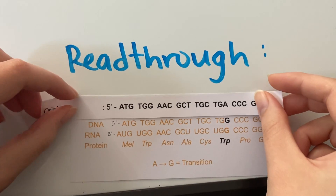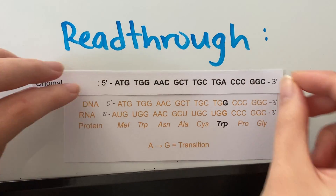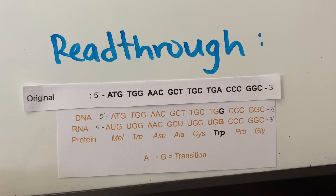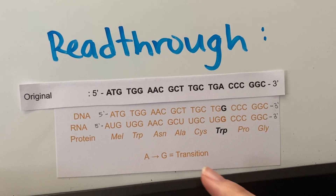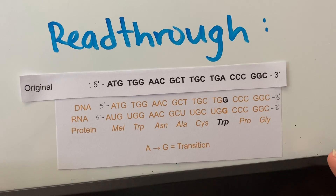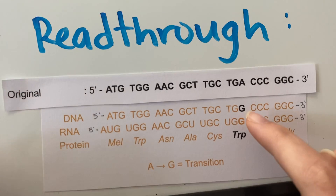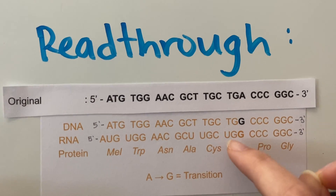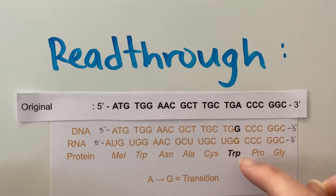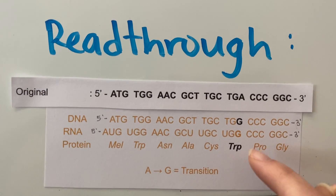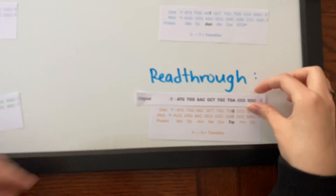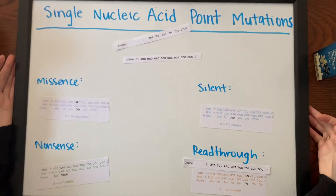Finally we have a read-through point mutation. In this case the stop codon is changed into a codon that codes for an amino acid, giving you a longer strand of protein. Here the A is transformed into a G, which is a transition, and this UGG will result in no more stop, so the protein sequence will continue. These are the point mutations for single nucleic acids.